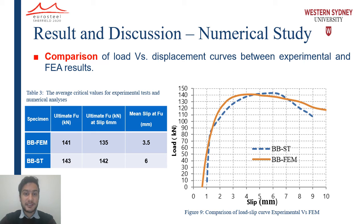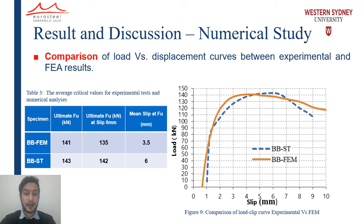Furthermore, the load versus displacement curves obtained from the experimental test and finite element analysis were compared, as shown in figure 9. Displacement due to adjustment of the loading is not shown in this graph. Comparing results shows a good agreement between the load-slip curve of the blind bolt shear connector from the direct shear test and the finite element analysis. The direct shear test gave a maximum load of 143 kN compared with 141 kN from finite element analysis, as shown in figure 9 and table 3 — a very close agreement.